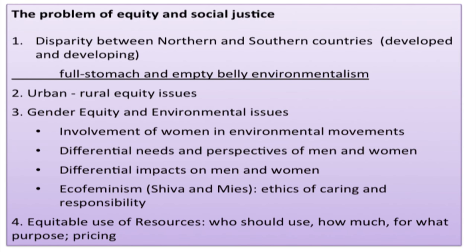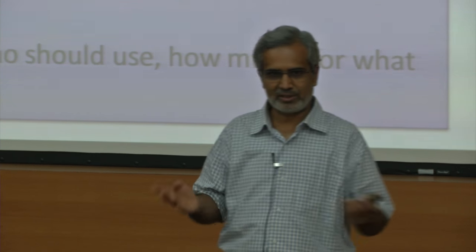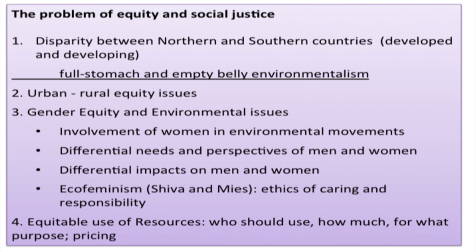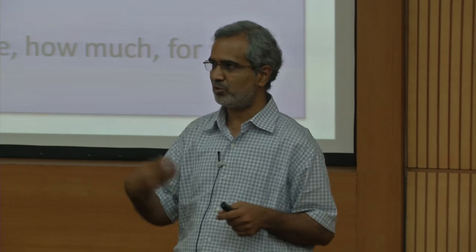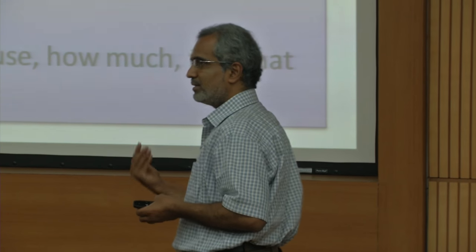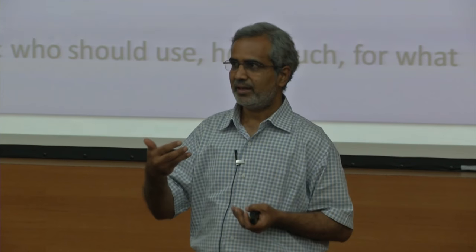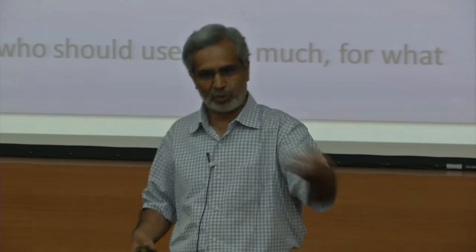Vandana Shiva, along with scholar Maria Mies, wrote the famous book Ecofeminism. The argument is that women's attitudes toward nature are somewhat different from men's. Women have a better ethic of caring and responsibility because they are trained to take care of children, the sick, and the elderly at home. Because men have controlled decision-making for a long time in history, an attitude toward nature as a resource to be exploited has developed, whereas women think of environment in more caring terms — for use, but not for overexploitation or profit-making.